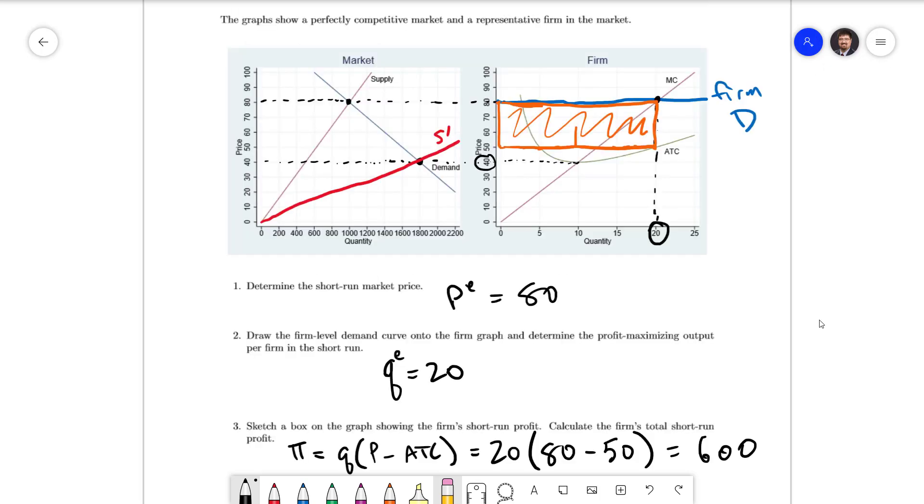Going back up to the graph to see this, in the long run our firm is going to produce 10. At that point our box for the profit has been squeezed down to a height of zero because price equals average total cost.